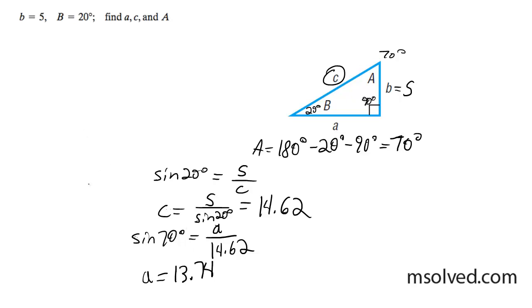So our final solutions are going to be angle A is equal to 70 degrees, side a is equal to 13.74, and side c is equal to 14.62. That's it.